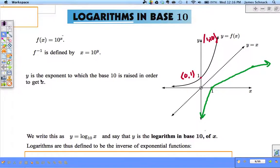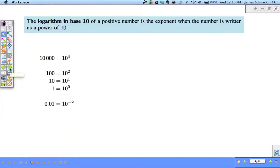How do we undo multiplying? We divide. How do we undo squaring? We square root. How do we undo raising to the x power or raising to the 10th power? We take the log. The way we undo exponentials is by logging. So the logarithm in base 10 of a positive number is the exponent when the number is written as a power of 10.